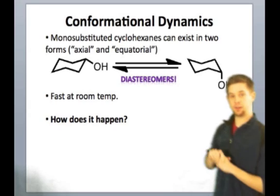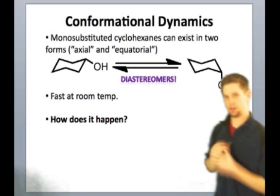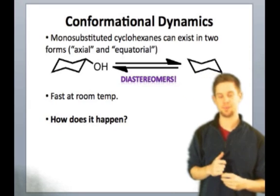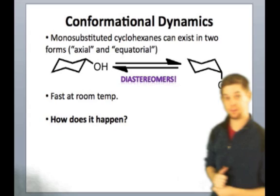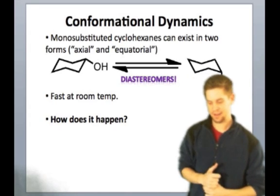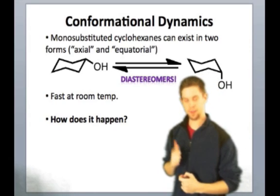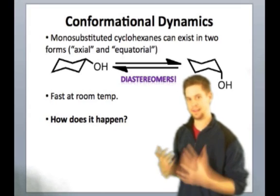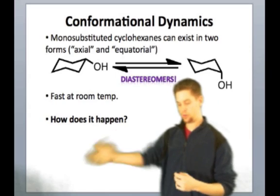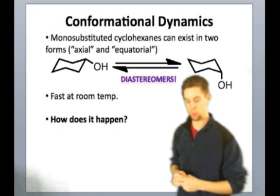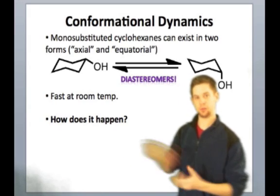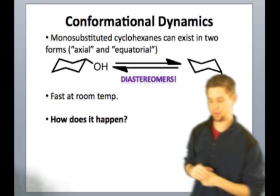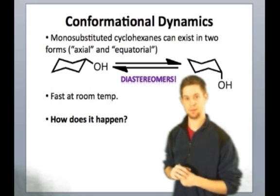And you'll notice here that I've written that these are diastereomers, which they are. They're non-superimposable mirror images. You'll remember from our discussion of the energetics of stereoisomerism that diastereomers have different energies. That's interesting in this case because that means that conformational changes are changing the energy of the molecule. So we can ask the question, which of these two conformations is more stable, the one with the group in the equatorial position or the one with the group in the axial position?